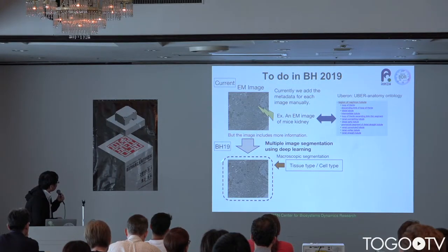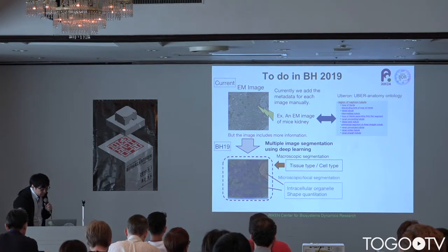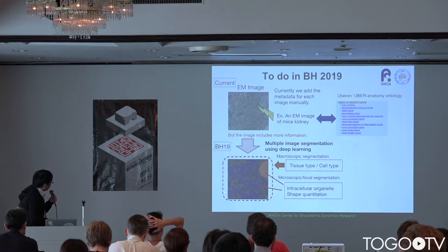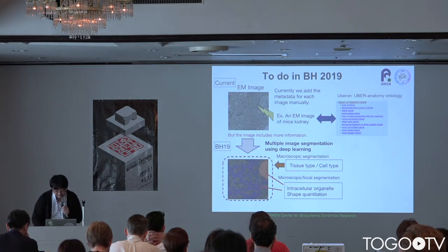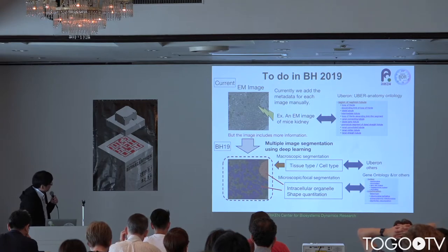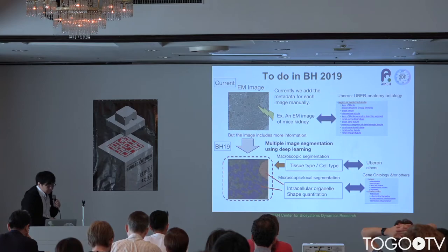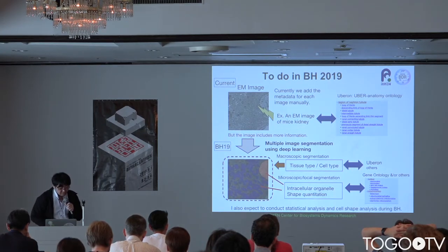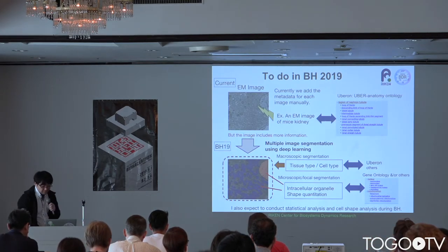In macroscopic segmentation, I identified the cells, tissue type, and cell type. In local segmentation, we tried to identify mitochondria shape and nuclear shape, and then quantify those shapes. We then linked these results to ontologies and combined these ontologies. Finally, I expect to conduct statistical analysis and cell shape analysis.